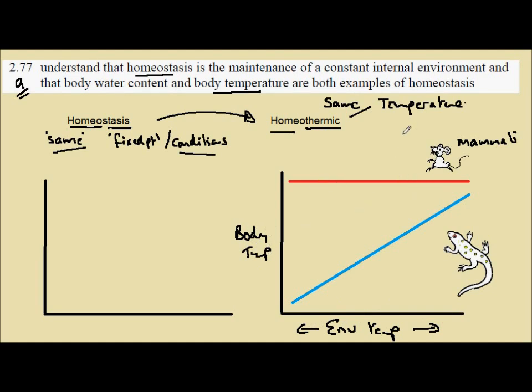These are homeothermic organisms and they carry out a process called thermoregulation, an example of homeostasis. Other organisms' body temperatures vary with the environmental temperature.